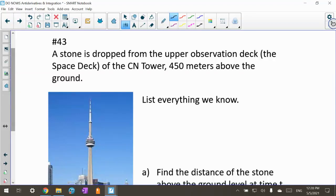This video is for my Calculus 1 students, and we're talking about antiderivatives and motion. I have a problem here about a stone that is dropped from the upper observation deck, the space deck of the CN Tower, 450 meters above the ground.